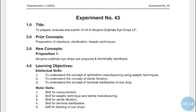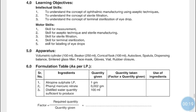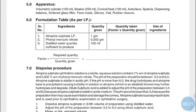Hello everyone, we have started the ophthalmic formulations. Experiment number 43 is to prepare, evaluate, and submit 10 ml of Atropine Sulfate Eye Drops IP. Apparatus required includes a volumetric cylinder of 100 ml capacity, beaker, conical flask of 100 ml capacity, autoclave, spatula, dispensing balance, sintered glass filter, face mask, gloves, a vial, and rubber closure.